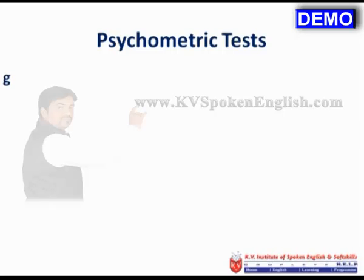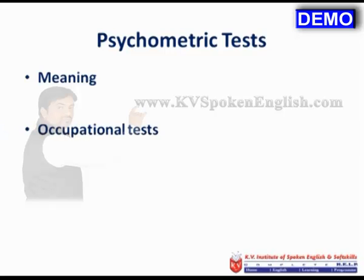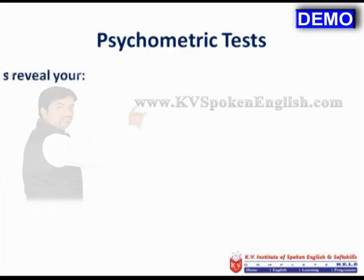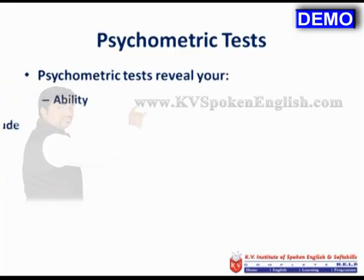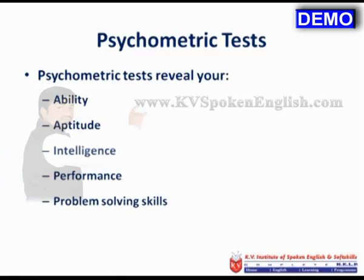A psychometric test evaluates a person's capacity and ability to act and react to a particular situation, and also evaluates the person's experience in ordering thought and behavior. Psychometric tests are also called occupational tests, psychological tests, and personality tests. They reveal your ability, attitude, intelligence, performance, problem-solving skills, and verbal and numerical reasoning skills.